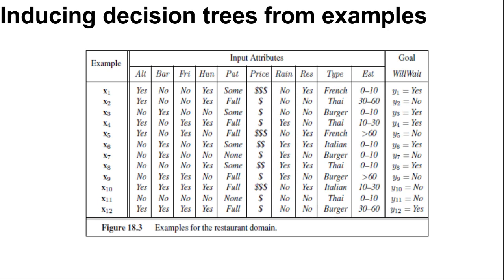By most important attribute, we mean the one that makes the most difference to the classification of an example. That way we hope to get the correct classification with small numbers of tests, meaning that all paths in the tree will be short and the tree as a whole will be shallow.